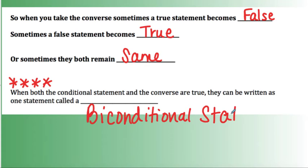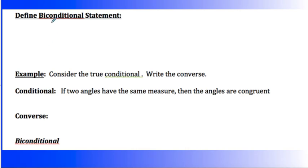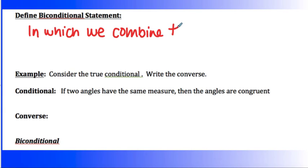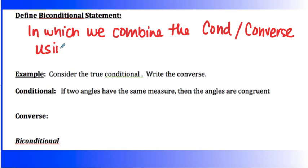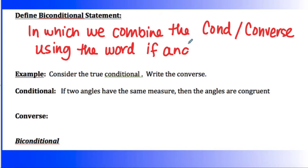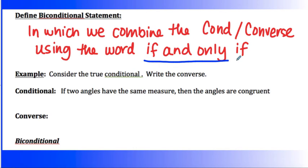All definitions can be written as bi-conditionals — all of them. A bi-conditional statement combines the conditional and the converse using the words 'if and only if.' Mathematicians like symbols, so we write 'IFF,' which means 'if and only if.'